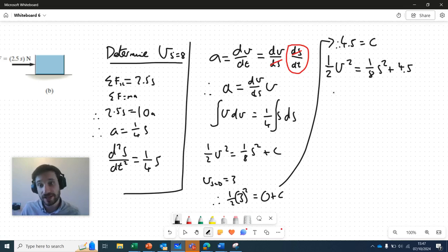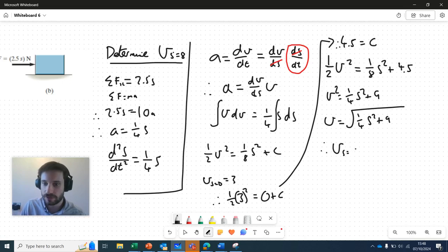We're trying to determine v when s is equal to eight. What I'm going to do is multiply both sides by two first, which will give me v squared is equal to a quarter s squared plus nine. And I'm going to square root both sides. So v is equal to square root of a quarter s squared plus nine. Therefore, v when s equals eight is equal to root a quarter times 64 plus nine. Square root of 0.25 times 64 plus nine gives me five. It's equal to five meters per second.